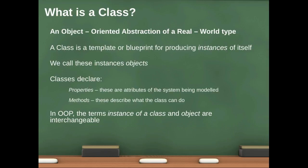Classes for their objects will declare two broad categories of things. They will declare properties, which are attributes of the system that we're modeling, and they will declare methods. Methods are like C functions except they belong to the class itself. Methods describe what the class can do.